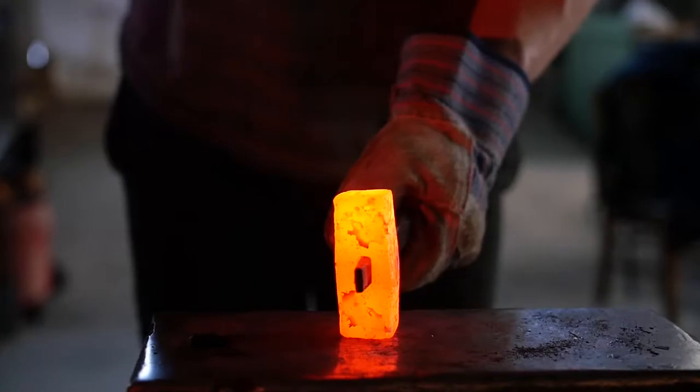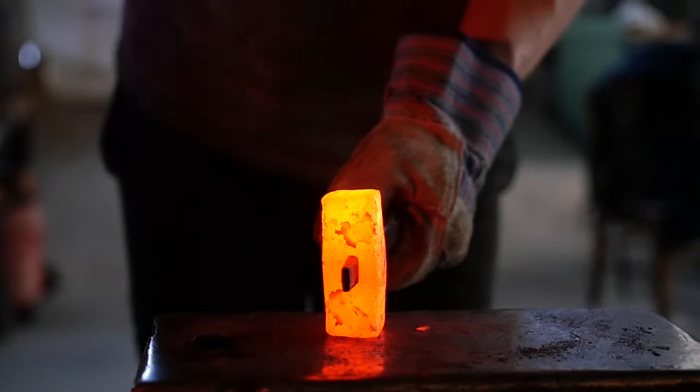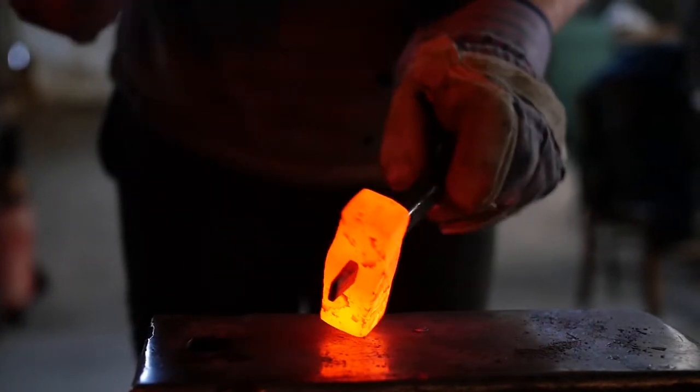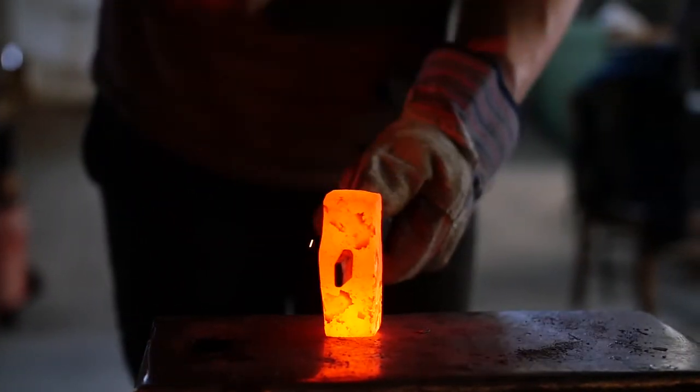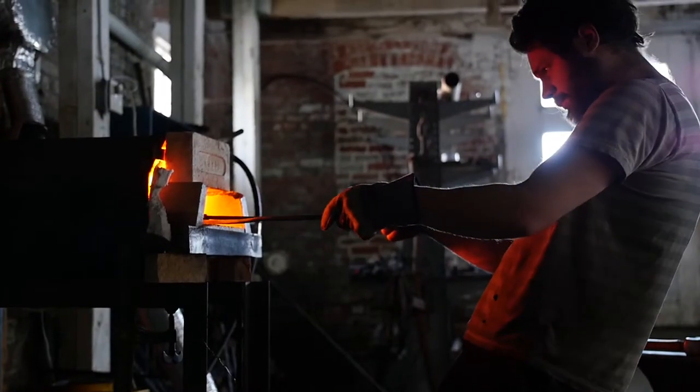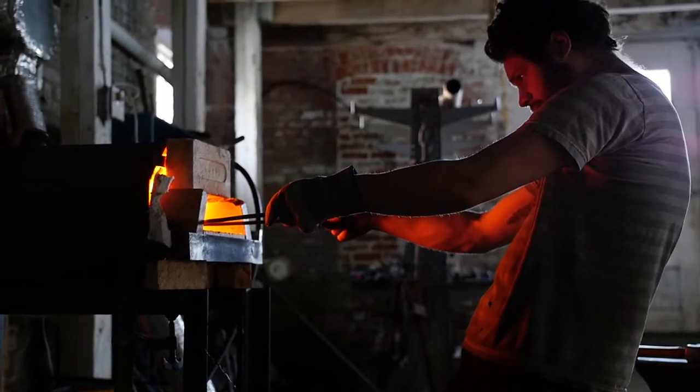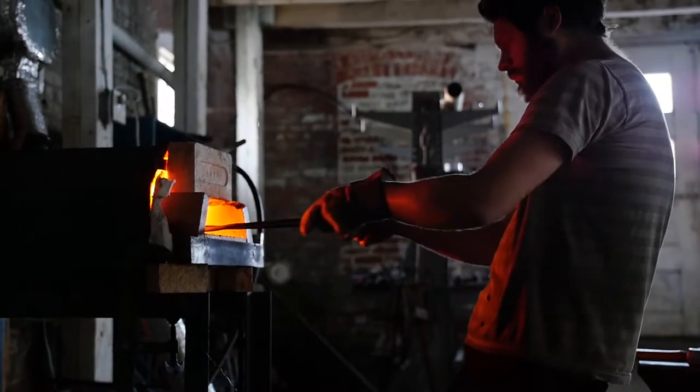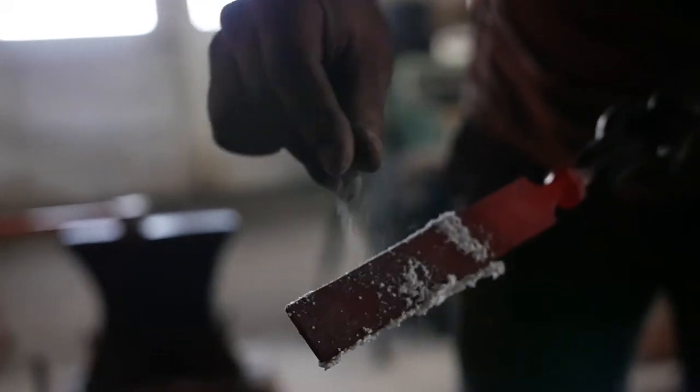As soon as I learned that someone could shape metal by forging it, I just knew I had to do it. My name is Elias Sedaris and I'm a toolmaker. I've been making tools for about six years.